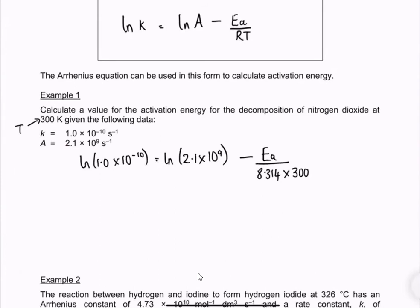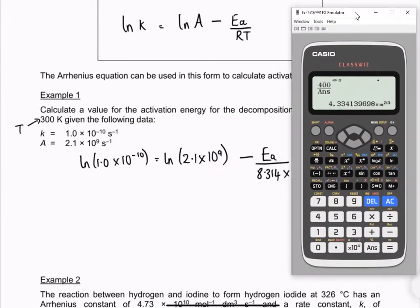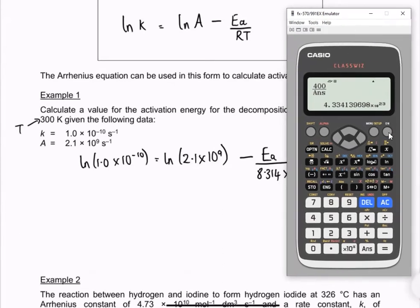So what we're going to do is put in those first two log values into our calculator and just work them out. I'm just going to bring my calculator in. I know it's going to cover over a part there, but we don't need that bit just now. So I'm just going to work out this bracket here. I'm going to go ln, 1.0 times 10 to the minus 10, work that out. So that one's coming out as minus 23.0.